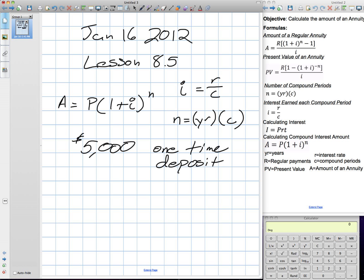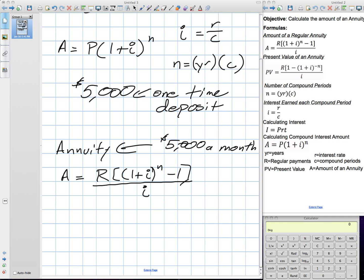An annuity is when we make regular deposits into the bank and earn interest. So an annuity is a very different formula. The amount of annuity A is equal to the regular payments R times bracket 1 plus I to the power of N minus 1, divided by I. Our I and our N are still the exact same, but this would be if I was maybe getting $5,000 every month. That's what an annuity is compared to our one-time deposits where we're just compounding interest.